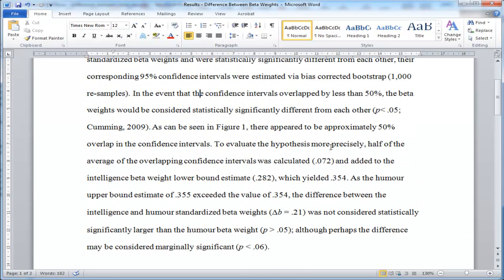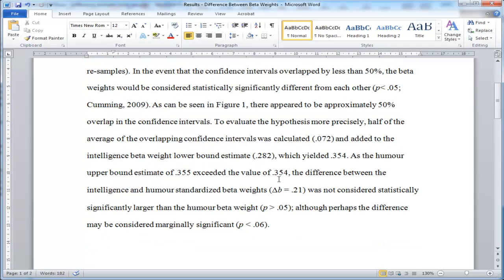To evaluate the hypothesis more precisely, half of the average of the overlapping confidence intervals was calculated, which equaled 0.072. It was added to the intelligence beta weight lower bound estimate of 0.282, which yielded 0.354.